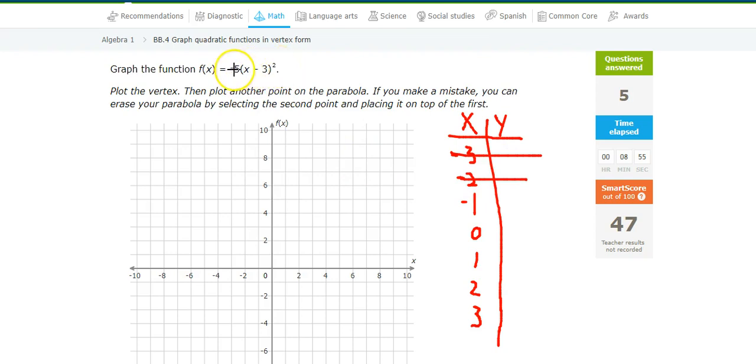0 minus 3 is negative 3. Squared is 9. Not even going to fit on the graph. 1 minus 3 is negative 2. Negative 2 squared is 4, times negative 5... Okay, that one's getting close, but I'm up to a 20.